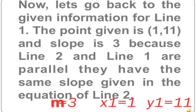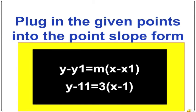Now let's go back to the given information for Line 1. The point given is (1, 11) and the slope is 3, because Line 1 and Line 2 are parallel and share the same slope from the equation of Line 2. This gives us x1 equals 1 and y1 equals 11. Now we must plug in the given point into the point-slope form, which becomes: y minus 11 equals 3 times (x minus 1).